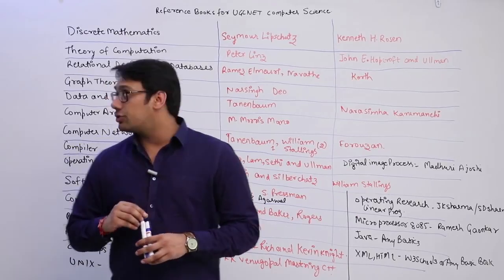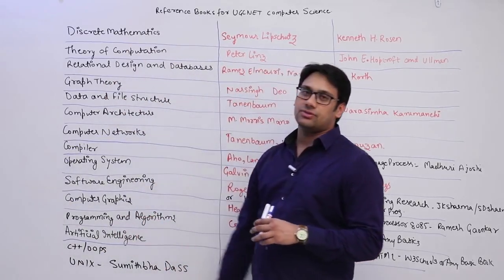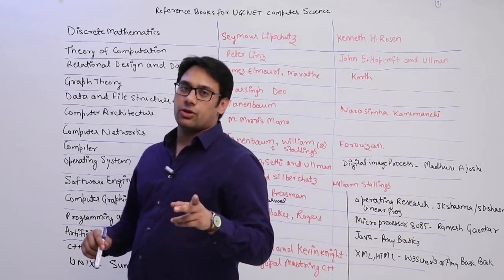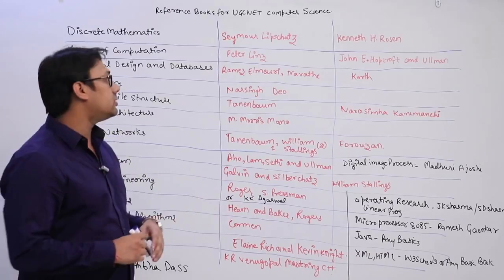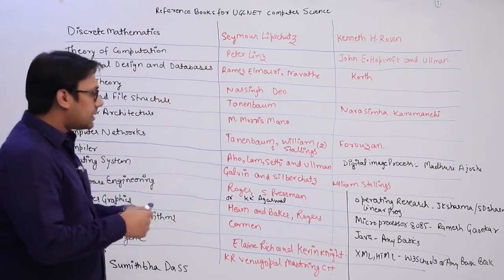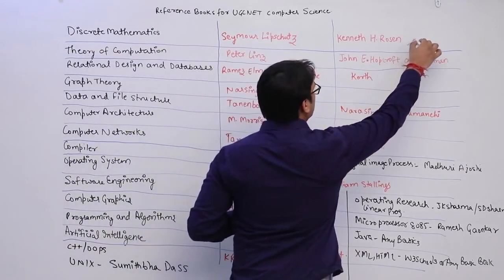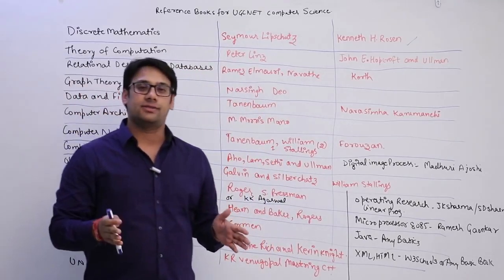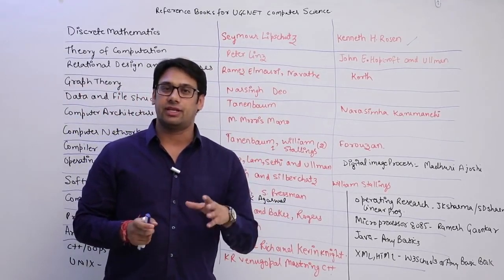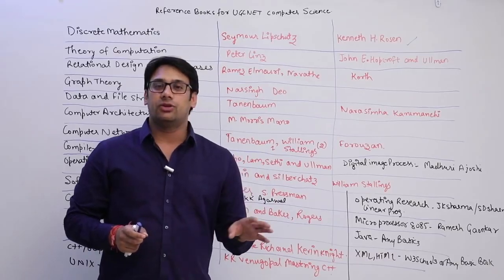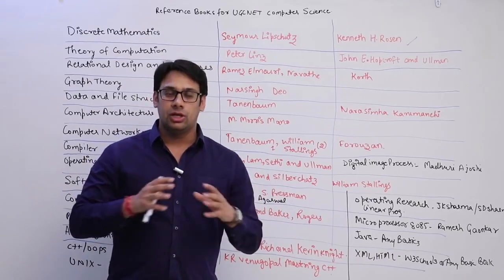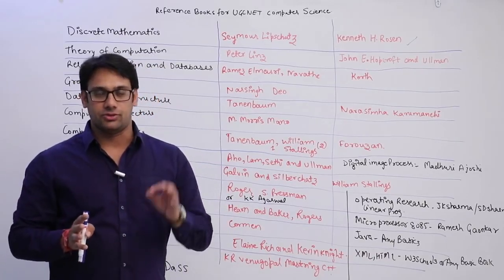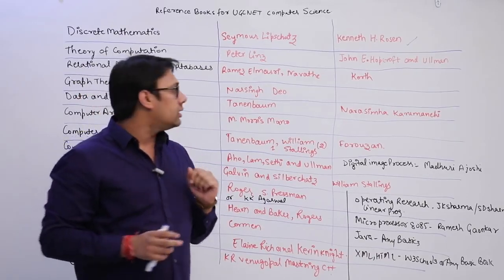For exam preparation, I'll take all subjects one by one. The first subject is Discrete Mathematics. You can refer two books: one is by Shamsher, and the second is Kenneth H. Rossen. Personally, I feel Kenneth H. Rossen is the better book. If you do all the practice questions in the exercise sections of Rossen, you don't even need to refer any other book — there are a huge number of practice questions after every chapter.